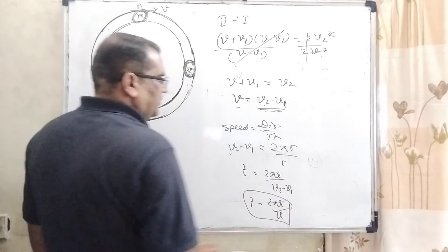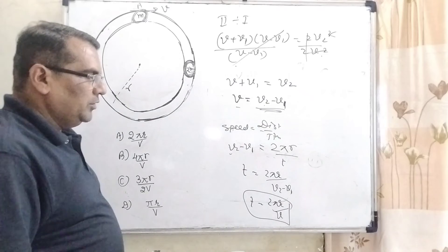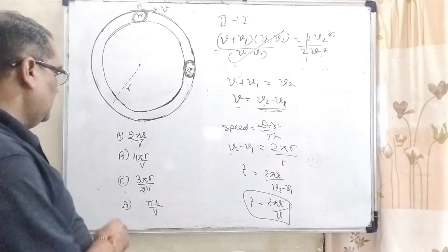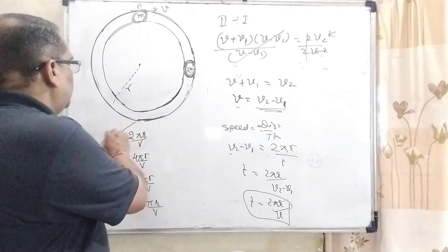So here the time taken for second collision, that is t = 2πr/v. So here option A is correct.